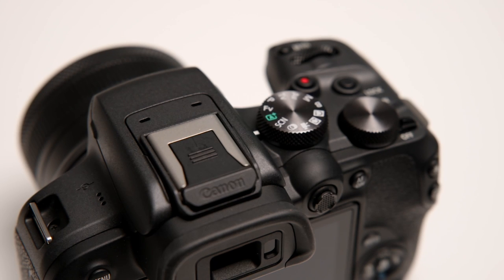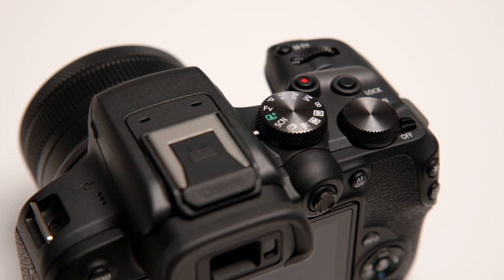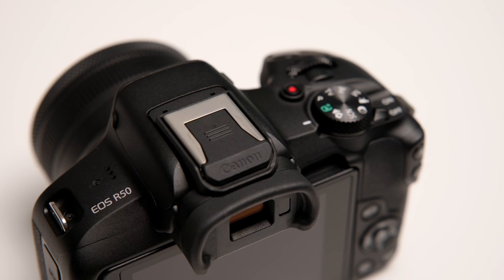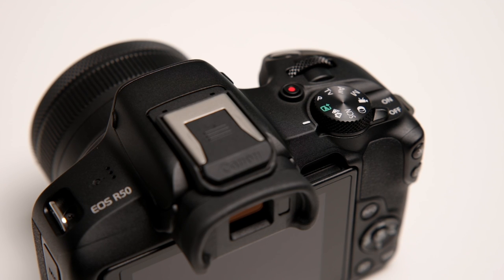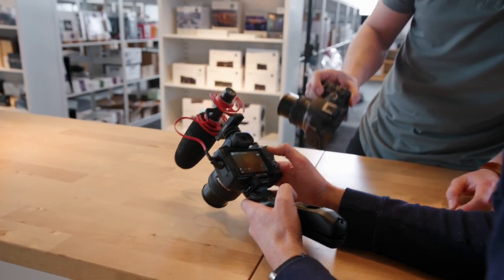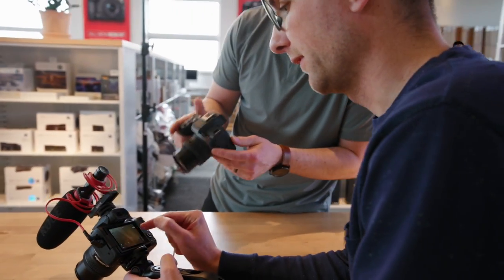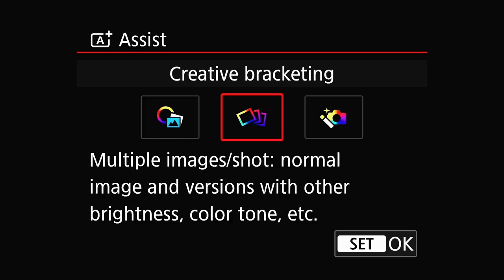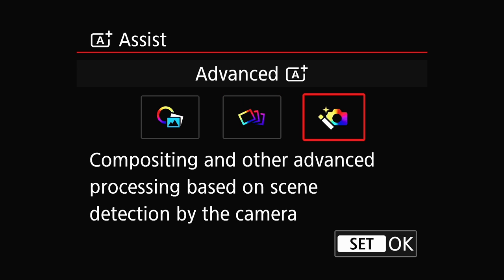And if you just look at the back, the R10 has more buttons — you have the little joystick nub. The R10 also has an auto plus enhanced mode. I have auto plus though. I have auto plus double enhanced. I have advanced auto plus, compositing other advanced processes based on scene detection with the camera.